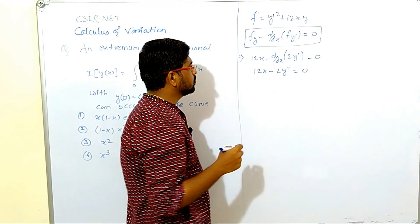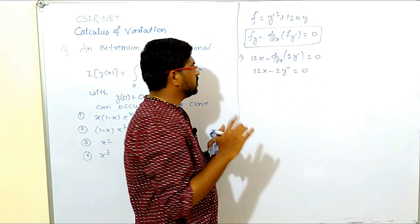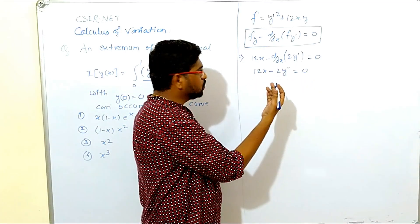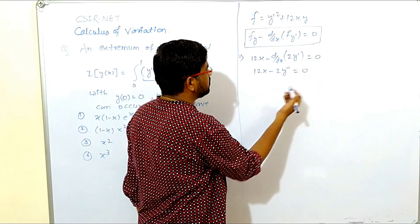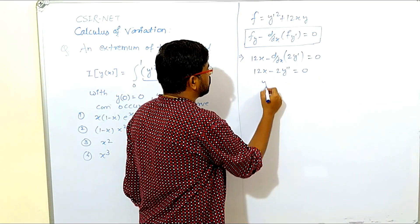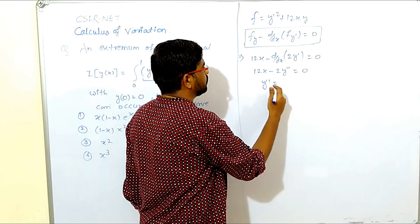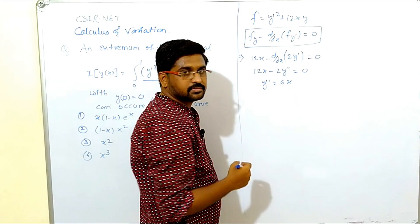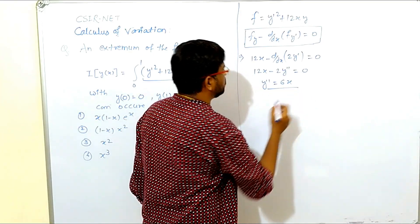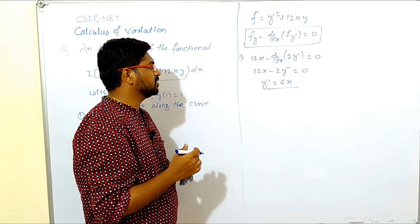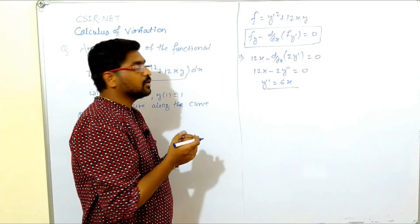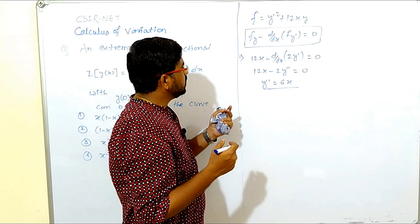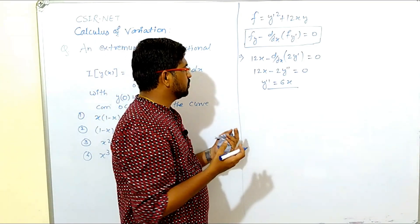We get one differential equation. Dividing throughout by 2 and rearranging, we get y'' equals 6x. This is a second-order linear differential equation. We take the auxiliary equation, find roots, and depending on whether roots are real and distinct, real and equal, or complex, we write the solution.